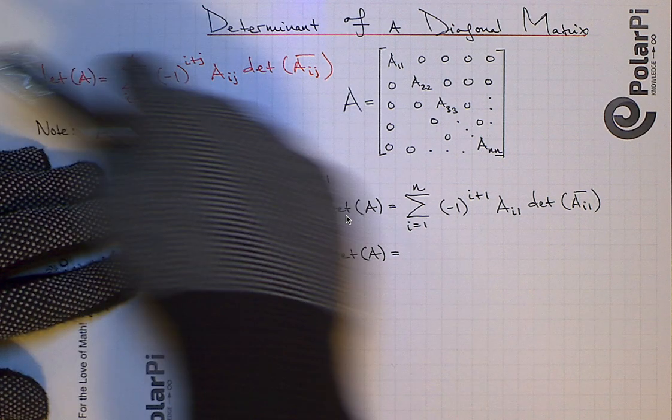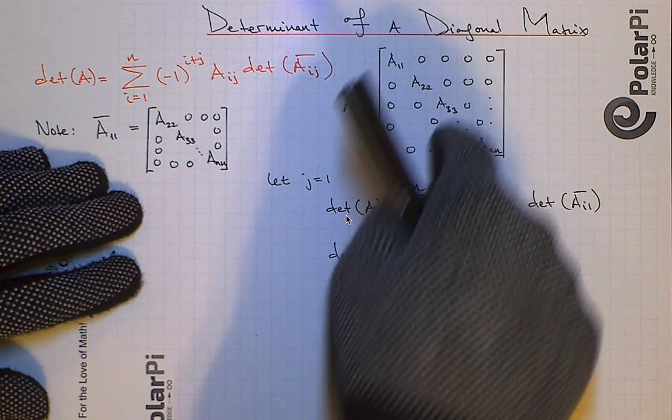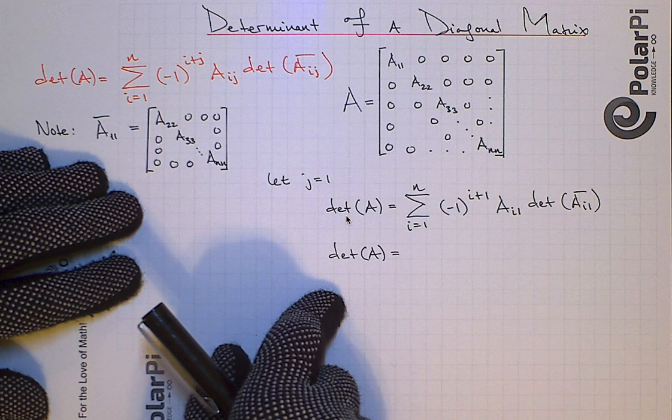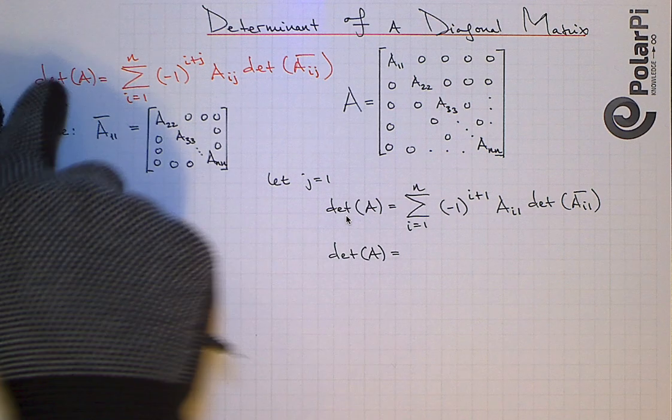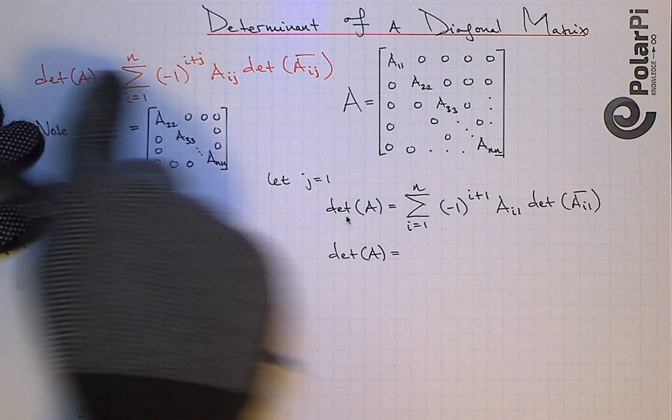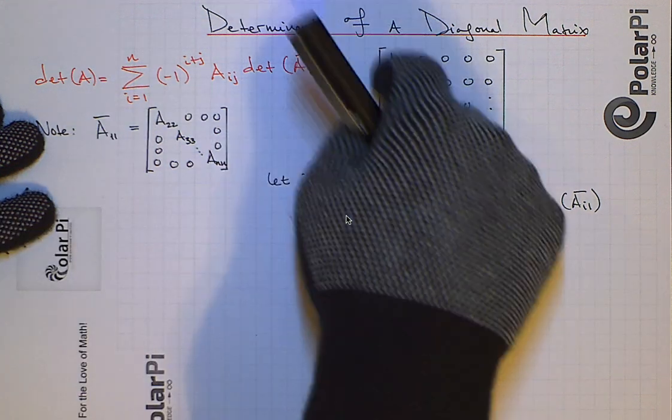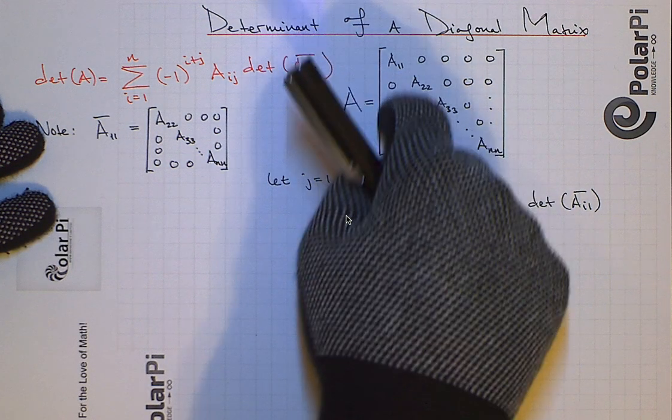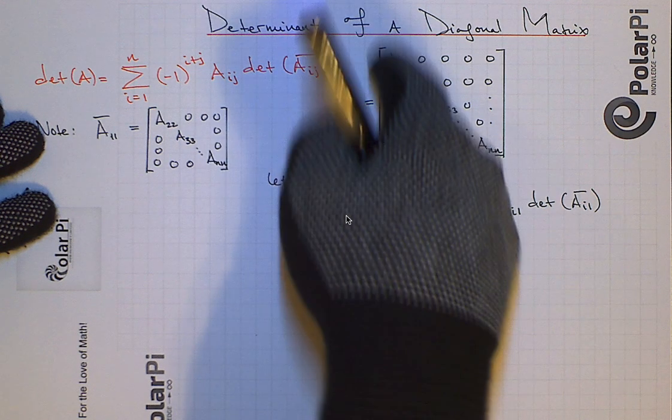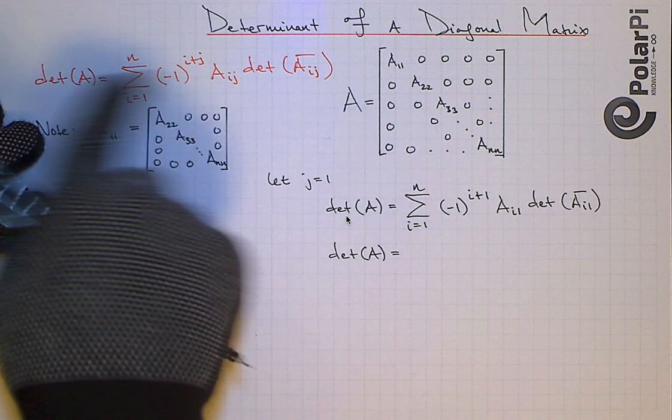And so we're gonna apply this definition in the situation where we have a diagonal n by n matrix. Now, this definition of the determinant for any n by n matrix is written so that we add along rows by fixing a column. So we need to fix a column the way that this is written here.